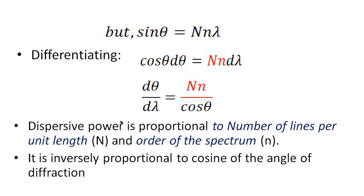Therefore, dispersive power equals nN divided by cos theta. Dispersive power is proportional to capital N (number of lines per unit length) and proportional to small n (order of the spectrum). Dispersive power is inversely proportional to cosine of the angle of diffraction.